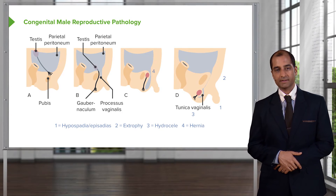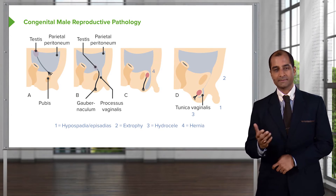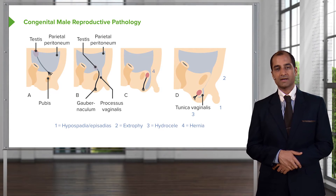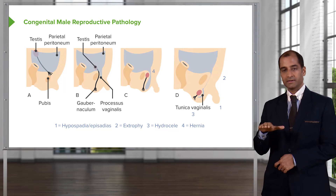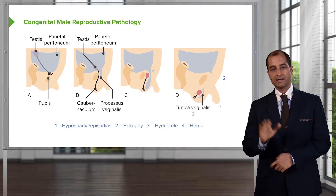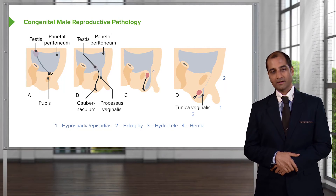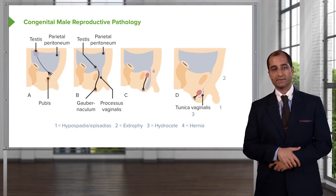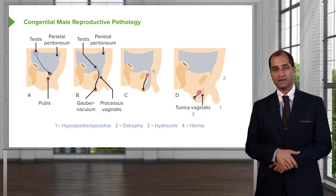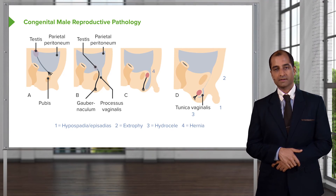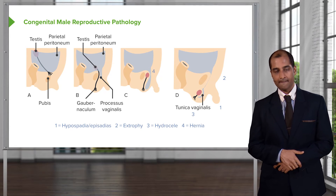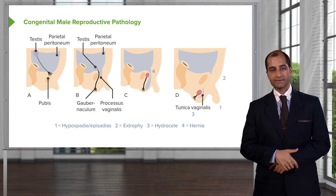Epispadias, as the name implies, would be the top of the penis — clinically called the dorsum. Think of it like dorsiflexion of the foot: you're moving it toward your leg. Here, with epispadias, you have failure of fusion on the dorsal aspect. The complication in the child is bladder exstrophy — E for epispadias, E for exstrophy. Hypospadias is more common than epispadias.